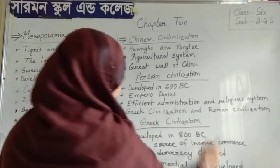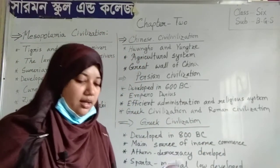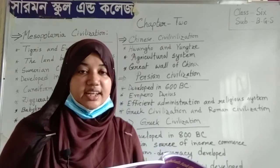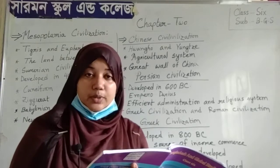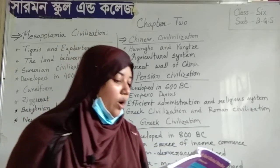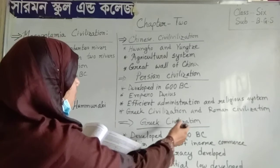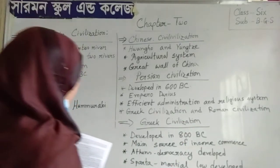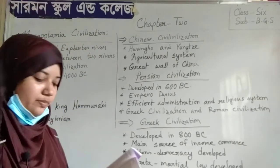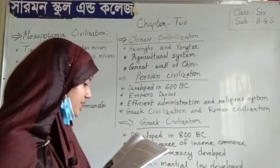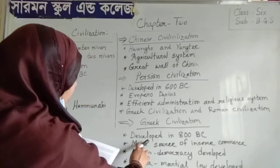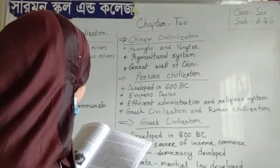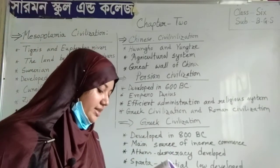Next, Greek civilization and Roman civilization. Most of the ancient urban civilizations developed in Asia and Africa. Two urban civilizations developed in Europe — one is Greek civilization and one is Roman civilization. Greek civilization developed in 800 BC.